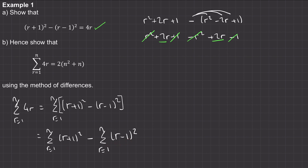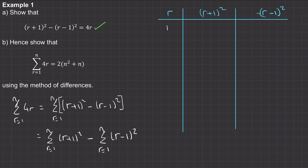To do this, I'm going to create a table. When r equals one, we have one plus one which is two, so two squared, and then minus one minus one which is zero, so minus zero squared. When r equals two, we get three squared, then minus one squared. When r equals three, we get four squared, and in the final column minus two squared. Can you see the pattern? When r equals four, we get five squared and minus three squared.